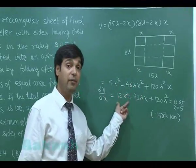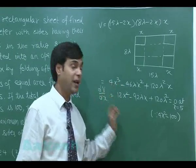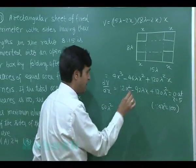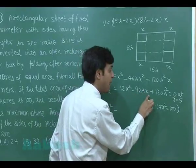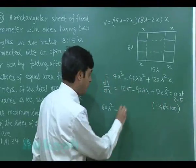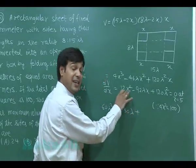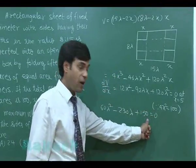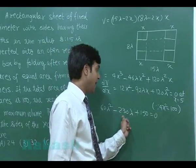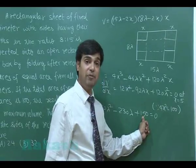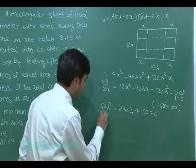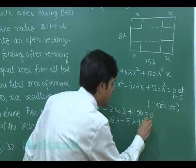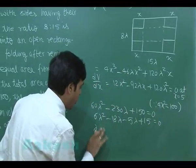Substituting x = 5 into the derivative equation, we get an equation in λ. Dividing by 2: 60λ² − 46λ(5) + 6(25) = 0, which simplifies to 6λ² − 23λ + 15 = 0. This can be factorized using factors 18 and 5 as 6λ² − 18λ − 5λ + 15 = 0.